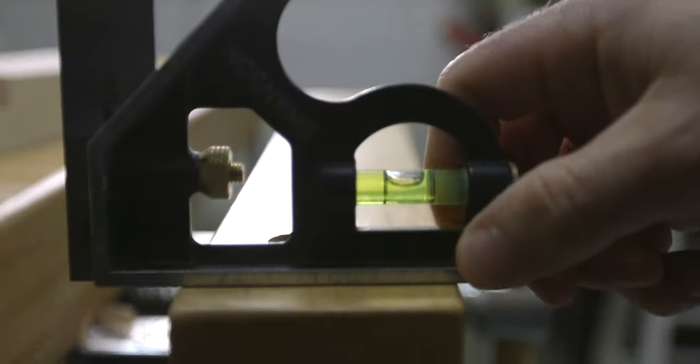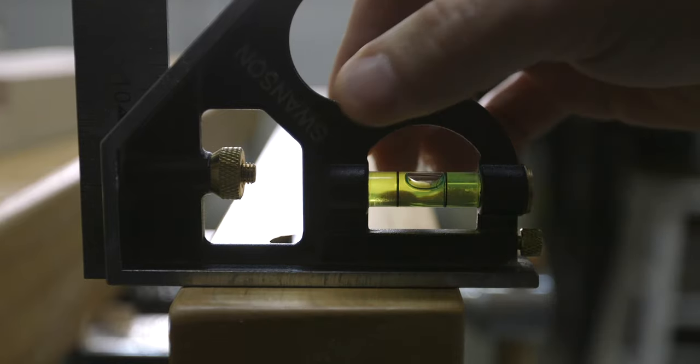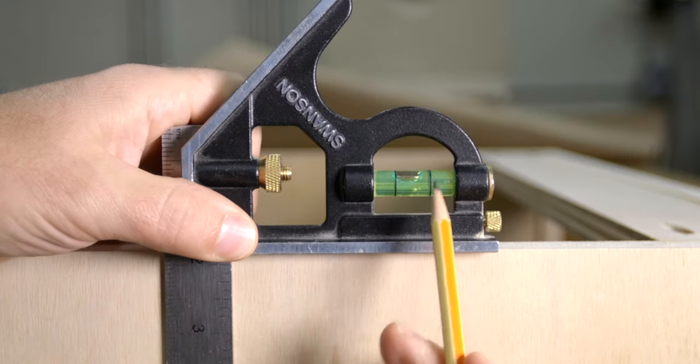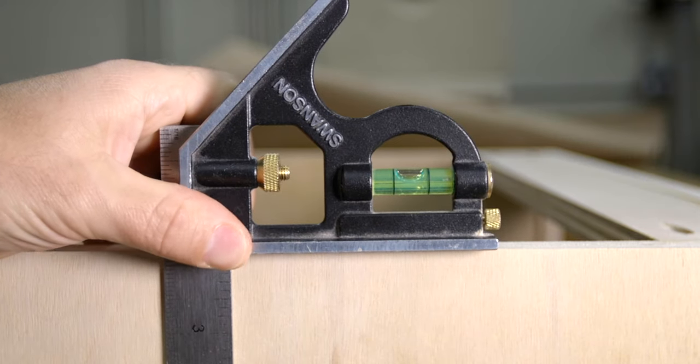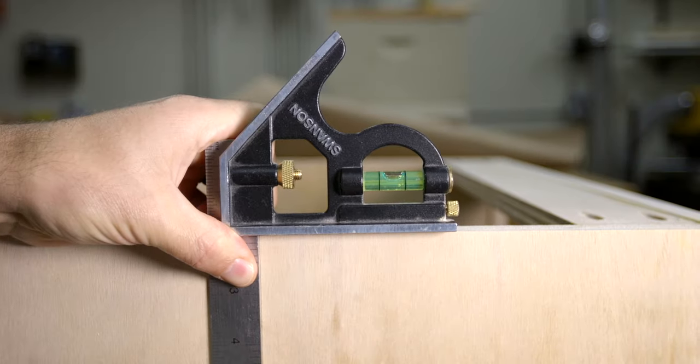The last two uses, number six and seven, are not available on all brands, but it's definitely worth talking about. Number six is to use the combination square to roughly level a surface using the built-in leveling vial. This is a very small level and would only be useful on small surfaces. However, if you're trying to draw a plumb line from an unlevel surface, like the top of this cabinet, the leveling vial definitely helps to plumb the blade.